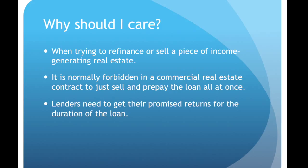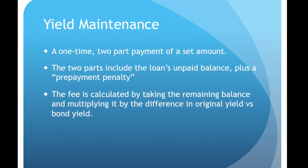Because lenders need the returns that were promised at the beginning. First off, yield maintenance is viewed as a two-part payment in a lump sum. The two parts include the loan's unpaid balance — so whatever's left over. For example, if it's a million-dollar loan and after the first three years there's seven hundred thousand dollars left, the first part — the unpaid balance — would be seven hundred thousand dollars. The second part is a prepayment penalty.